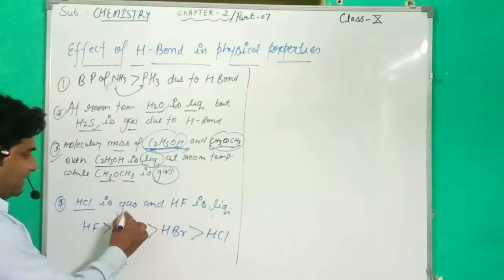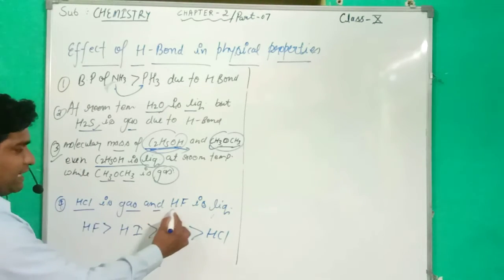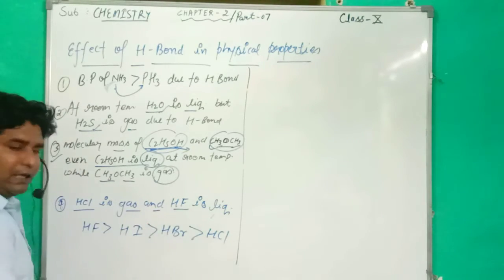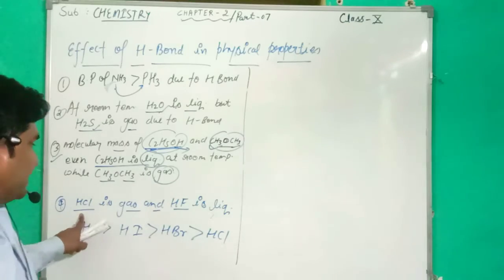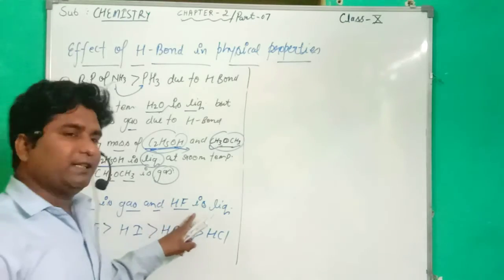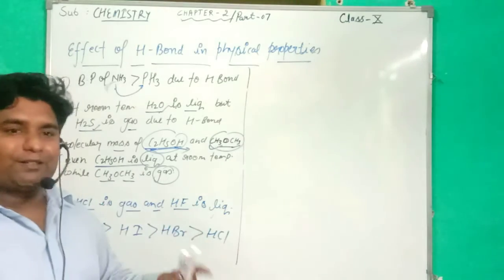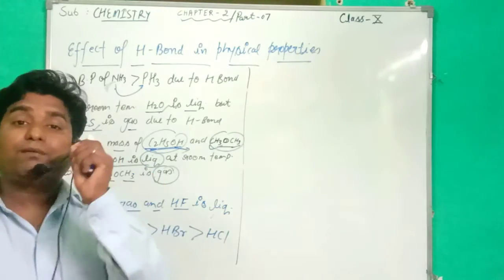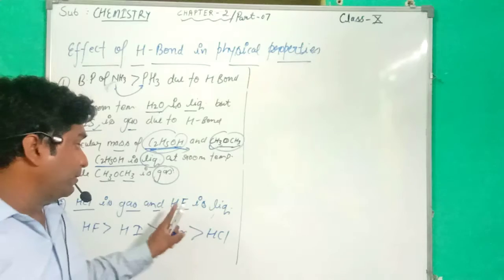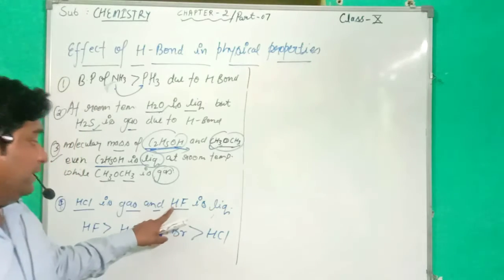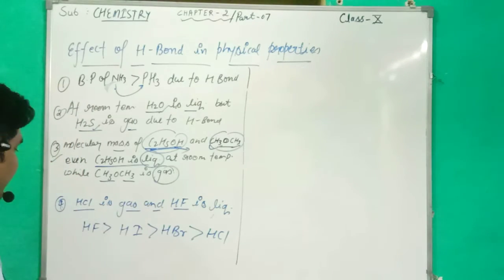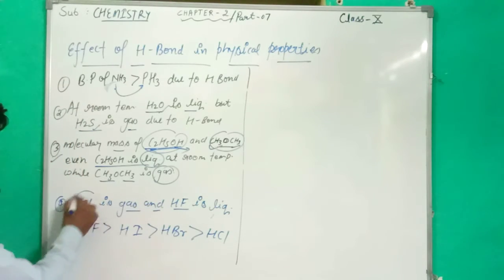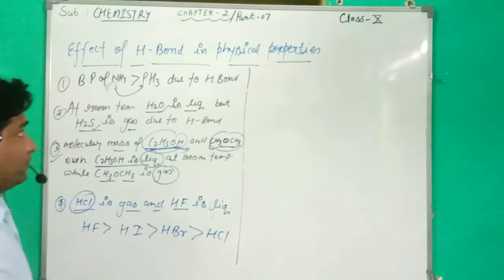Next: HCl is a gas and HF is a liquid, because the strength of the Hydrogen Bond in HF is greater than in HCl. HCl does not form a Hydrogen Bond, since only three elements — Fluorine, Oxygen, and Nitrogen — can form Hydrogen Bonds.